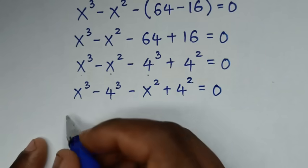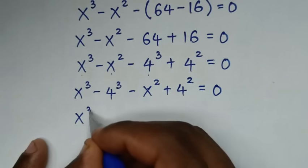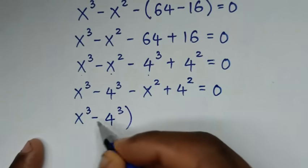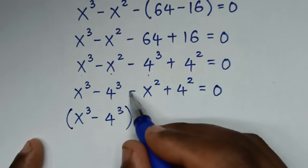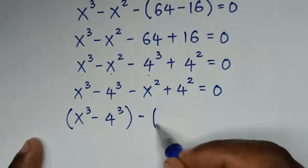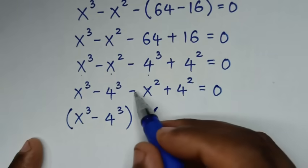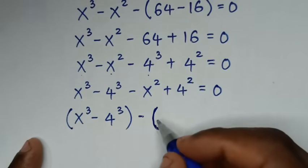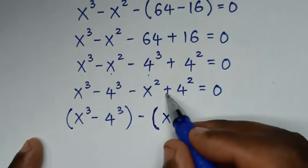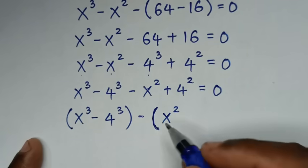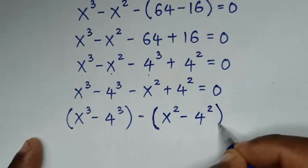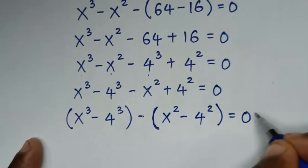We place terms inside brackets: (x³ minus 4³), then we take negative out of the remaining bracket, so negative of (x² minus 4²), giving (x³ minus 4³) minus (x² minus 4²) is equal to 0.